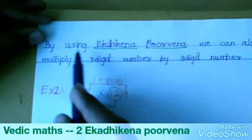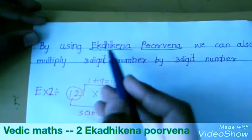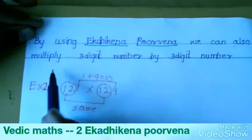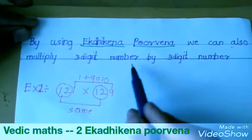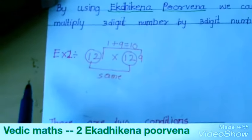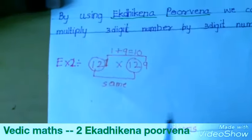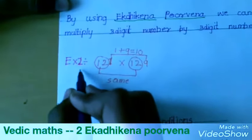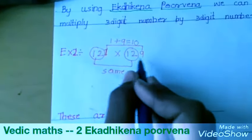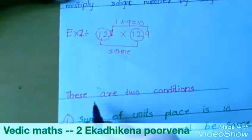By using Ekadhikena Purvena, we can also multiply a 3-digit number by a 3-digit number. Second example: 121 into 129.